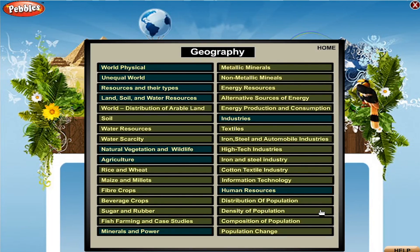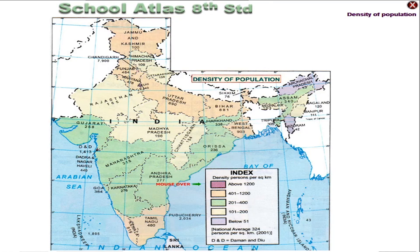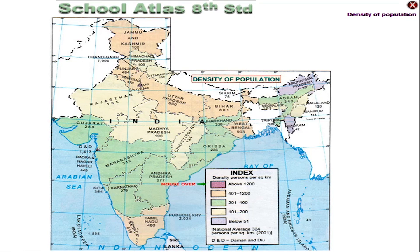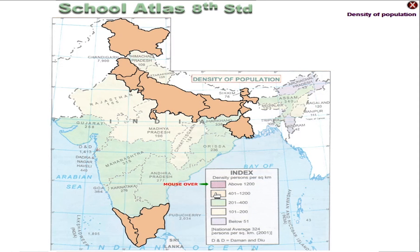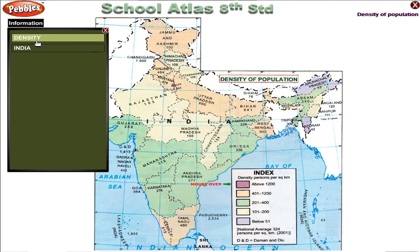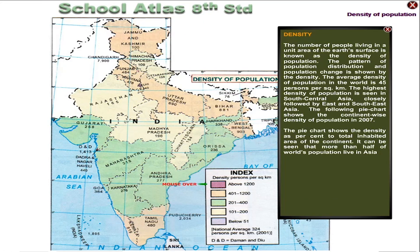Geography: Density of Population. The number of people living in a unit area of the earth's surface is known as the density of population. The pattern of population distribution and population change is shown by the density. The average density of population in the world is 45 per square kilometer.